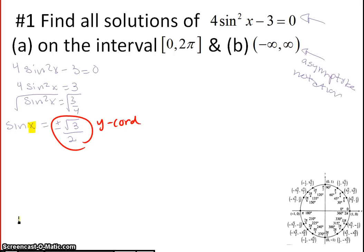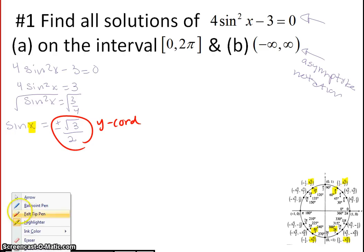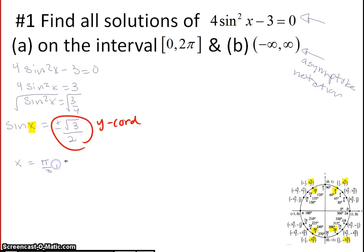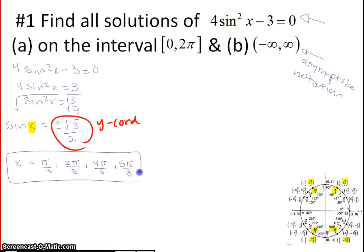Looking at the unit circle, we know sine is plus or minus root 3 over 2. So it's at π/3, 2π/3, 4π/3, and 5π/3 — all of those have a plus or minus square root 3 over 2. So I'm going to write those down: x can be π/3, 2π/3, 4π/3, or 5π/3. You will want your unit circle for this unit right in front of you. This is the answer to Part A — all solutions on the interval from 0 to 2π, meaning on one unit circle.